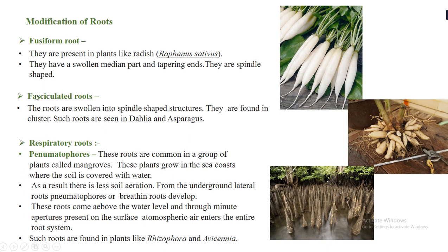Next is the fasciculated root, seen in dahlia and asparagus plants. They are somewhat similar in appearance to fusiform roots, but the key difference is that fasciculated roots always appear in clusters, whereas radish roots appear singly or in pairs.